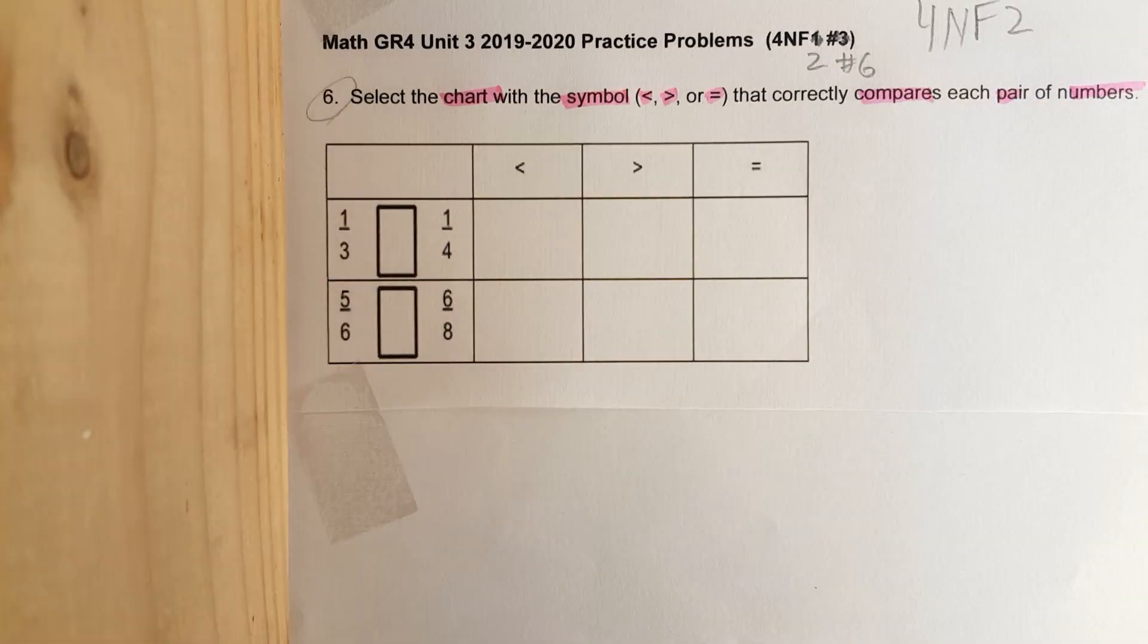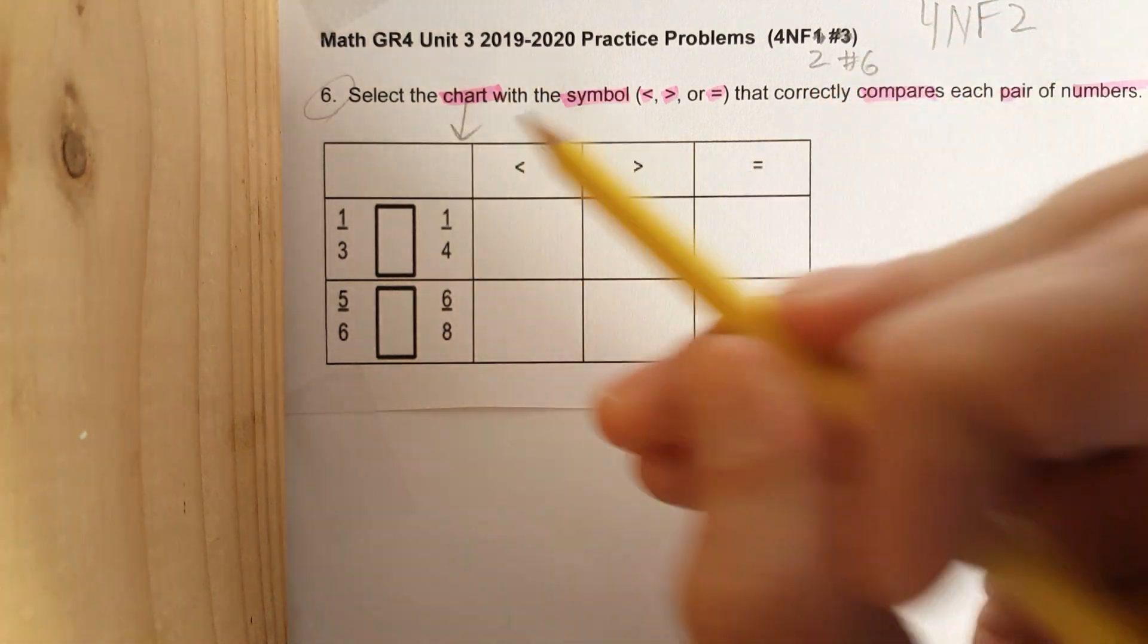Problem number six, 4NF2: Select the chart with the symbol less than, greater than, or equal to that correctly compares each pair of numbers. So this is the chart. These are the symbols. This is less than, this is greater than, and this is equal to.